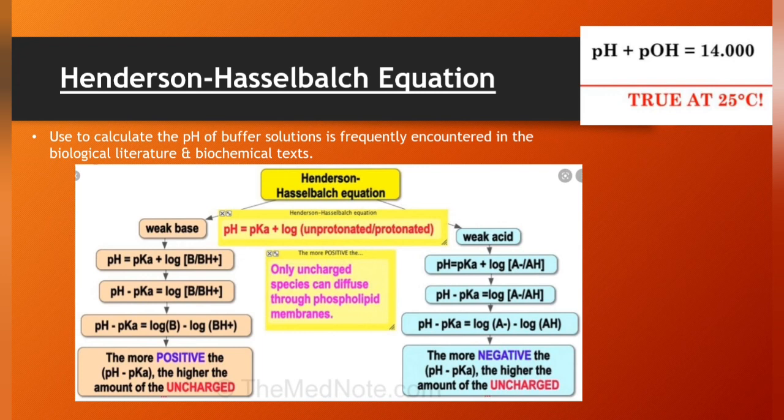In weak bases, pH equals pKa plus log B divided by BH+. pH minus pKa equals log B divided by BH+ concentration. log pH minus pKa equals log B minus log BH+. The more positive the pH minus pKa, the higher the amount of the uncharged.